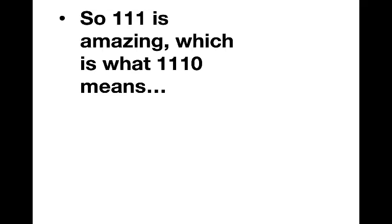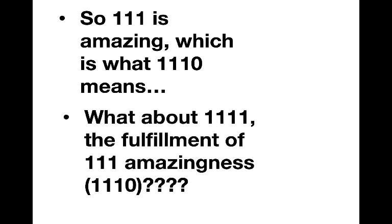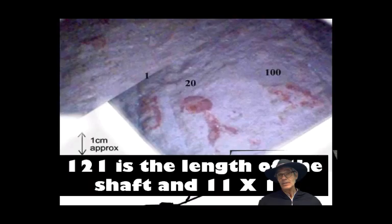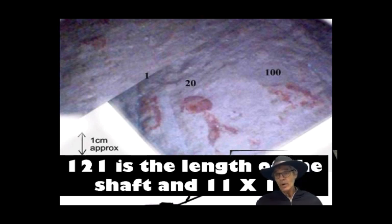1110. So 111 is amazing, which is what 1110 means, and then the fulfillment of that is 111 amazingness and 1111. So you've got the number 1, the number 20, and the number 100.